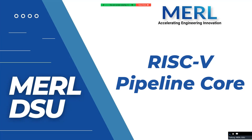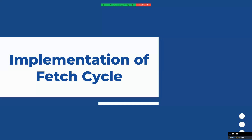Welcome to another video series on designing RISC-V. This is lecture number two, in which we will cover the first stage of implementation of the fetch cycle in a pipeline code version. We're going to see how we can implement the fetch cycle and convert our single cycle fetch into a pipeline version. Before going into the implementation, we'll cover a bit of theory on how it works, a recap of pipelining, and then we'll see what the first cycle consists of.